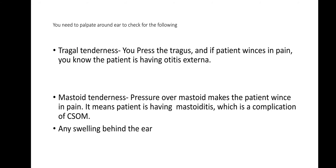On palpation, palpate around the ear for any fluctuation. Two tendernesses are to be elicited: tragal tenderness and mastoid tenderness. Tragal tenderness is elicited by pressing the tragus — if the patient is having otitis externa, they will wince in pain. Similarly, pressing on the mastoid will cause pain if the patient is having mastoiditis.